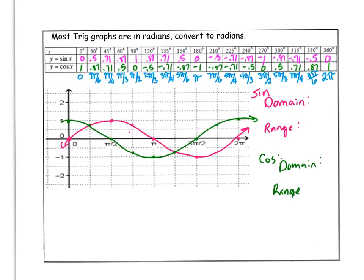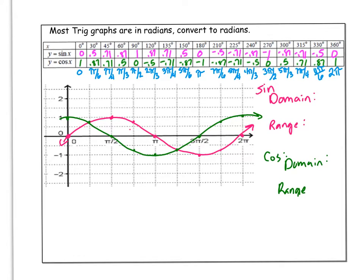The next page does the same thing, only we convert degrees to radians. So I did the same table: 0 degrees, 30 degrees converted to pi over 6, 45 to pi over 4 — just using our unit circle. Then I graphed it again on a coordinate plane with radians: 0, pi over 2, pi, 3 pi over 2, and 2 pi. Again I'm going to pay attention to where it starts, the peaks, the x-intercepts, and the valleys for both sine and cosine.